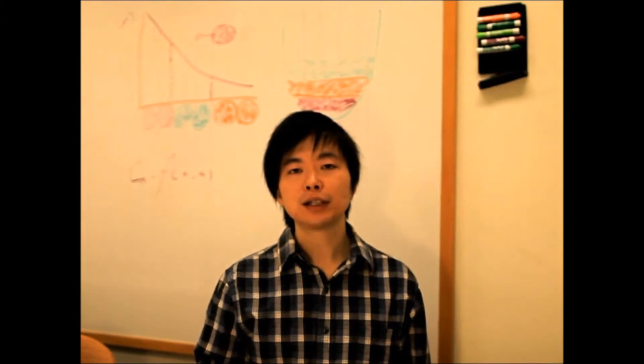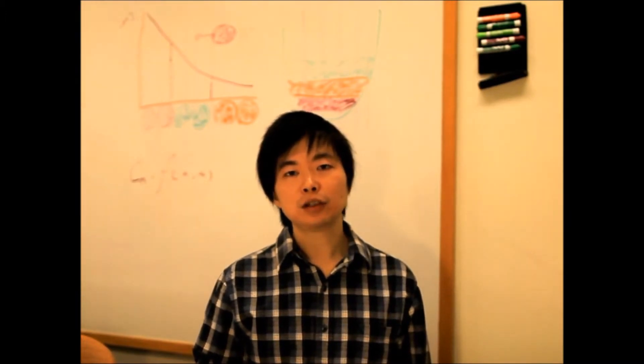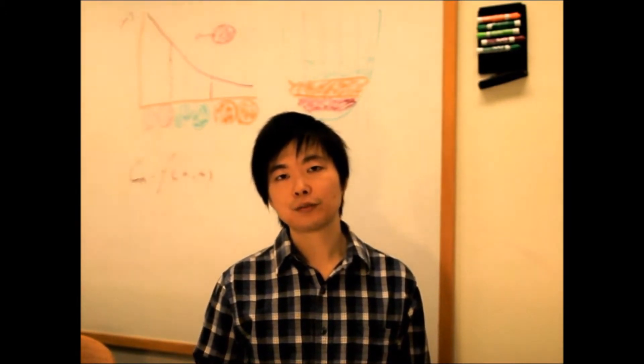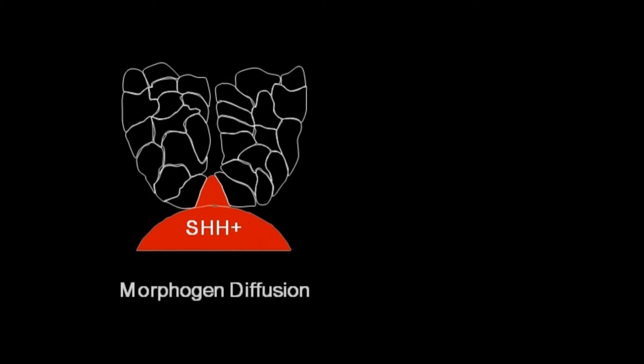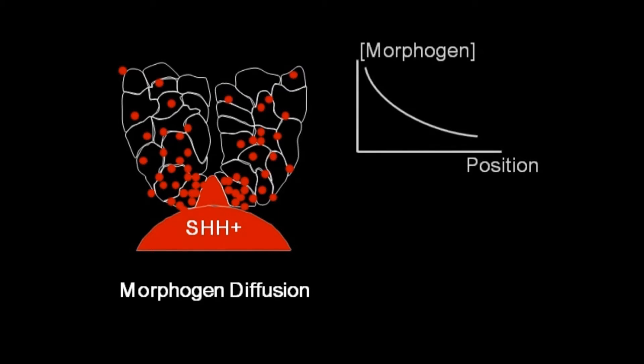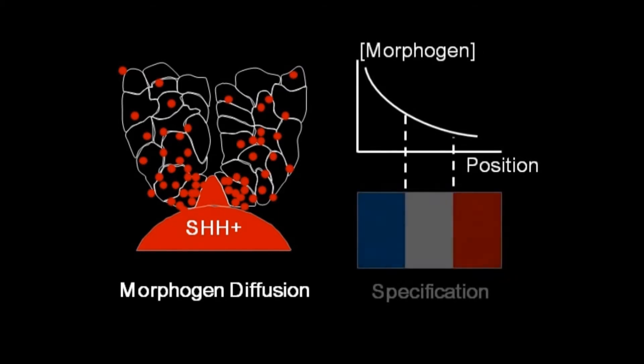How this pattern forms has been the focus of extensive research. Morphogens are signaling molecules that diffuse from a source to instruct cell fate. In the ventral neural tube, sonic hedgehog made by the notochord and floor plate specifies a wide variety of neural progenitors. Progenitor cells measure the amount of sonic hedgehog they receive to choose what cell fate to adopt. Therefore, it is believed that the gradient of sonic hedgehog specifies stripes of progenitors in different positions.